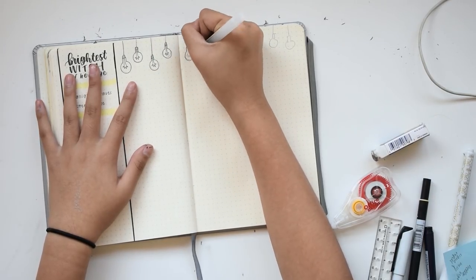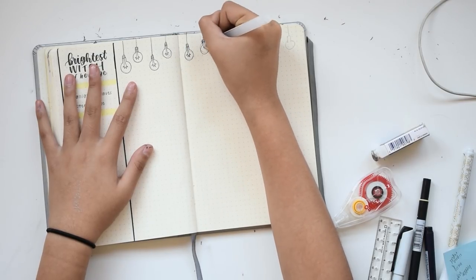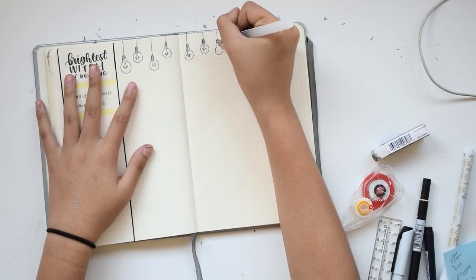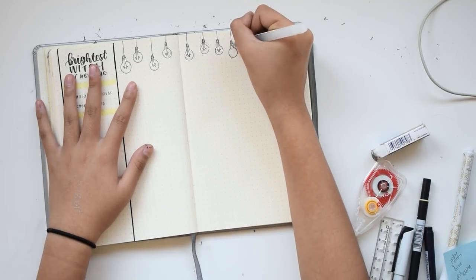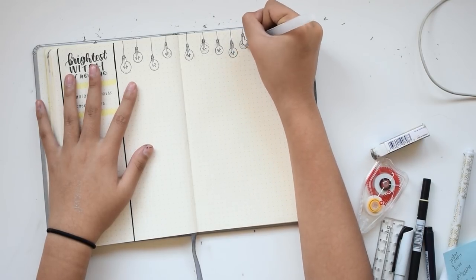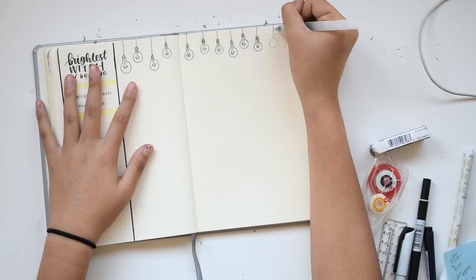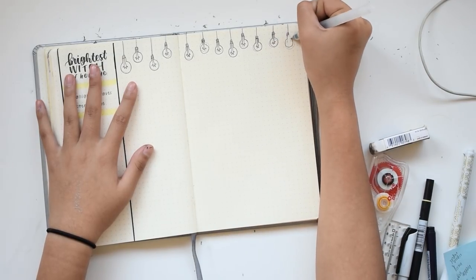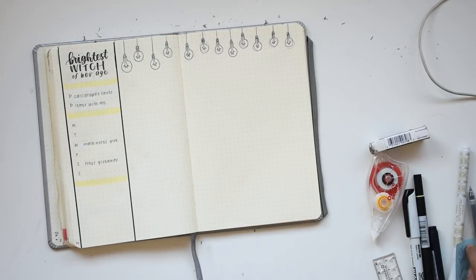So anyways, on this week's spread I'm not doing the fairy lights—I've switched back to more light bulb doodles, and these are a little bit rounder. And 'the brightest witch of her age' refers to Hermione from Harry Potter, who is my favorite character, life goals, everything. She's even my profile picture as you can probably tell.